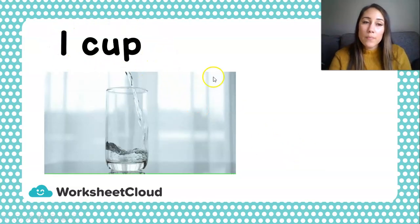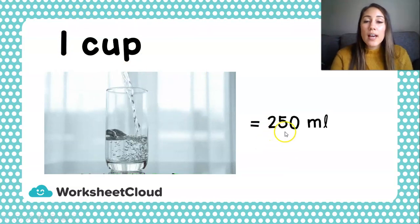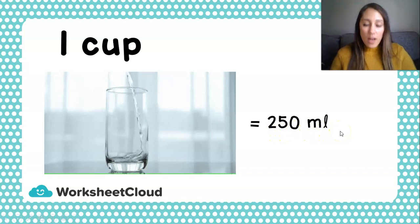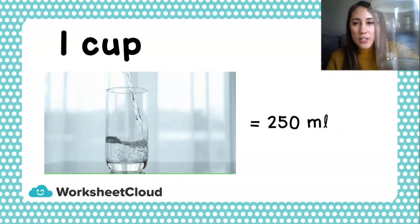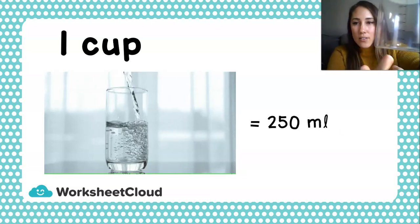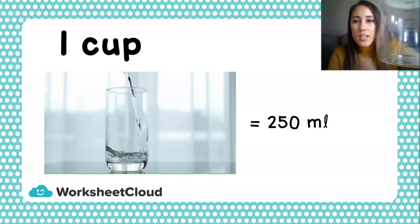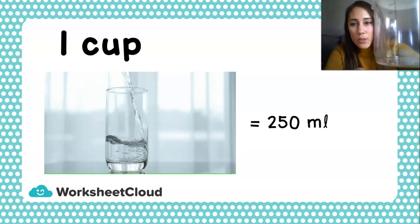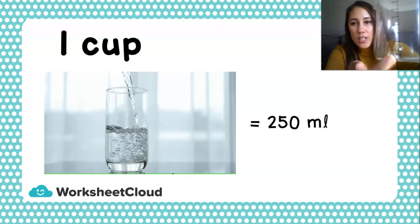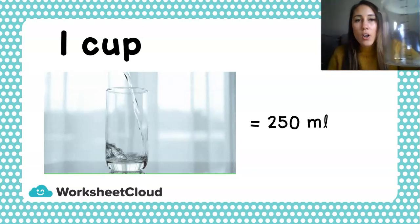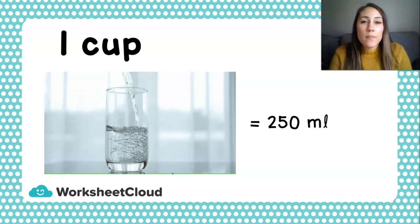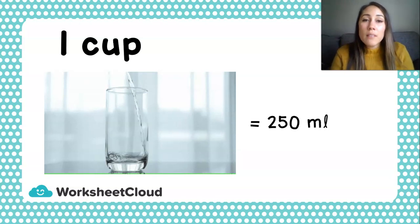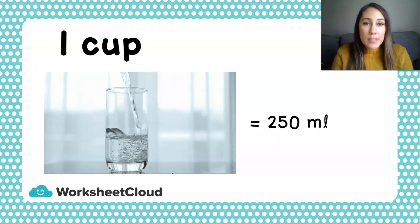One cup is going to be 250 milliliters. I have a measuring jug over here, and if you look at this measuring jug, you can see that there are tiny black lines on it. Those little lines mean that you are going to look on the measuring jug to see how many milliliters are inside it. If I want to bake a cake and my recipe says I need 250 milliliters of milk, that is what the recipe says.